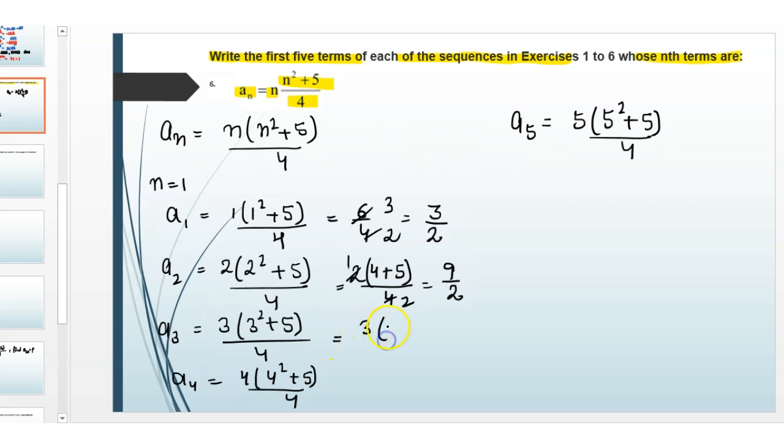Next, a3: 3 times (3² = 9 plus 5)/4 equals 3(9 + 5 = 14)/4.